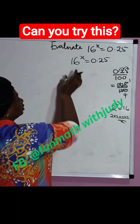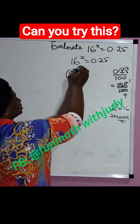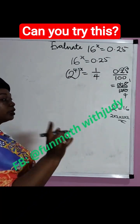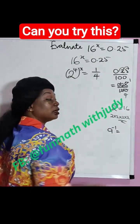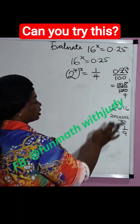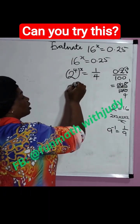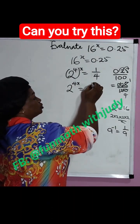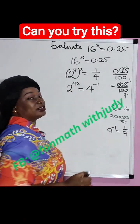Now we're going to write this as 2 raised to power 4, times power of x, equal to 1 over 4. By the law of indices, a raised to power minus 1 is equal to 1 over a. So we rewrite this as 2 raised to power 4x equal to 4 raised to power minus 1.